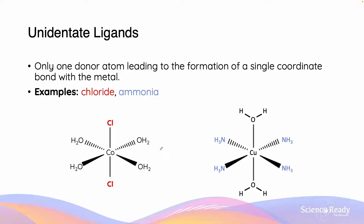Ligands can come in different forms. A unidentate ligand is a type of ligand where there is only one donor atom, which leads to the formation of only a single coordinate covalent bond. Examples of unidentate ligands are chloride and ammonia — chloride is demonstrated on the left while ammonia is demonstrated on the right. Water, which we have previously seen, is also an example of a unidentate ligand. We can see that it is the lone pair from the oxygen which leads to the formation of the coordinate covalent bond in water. Since there are a total of six coordinate covalent bonds for both of these metal complexes, the coordination number of both of them must be six.